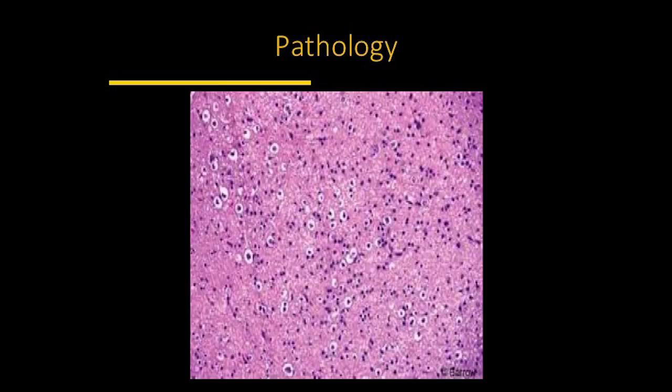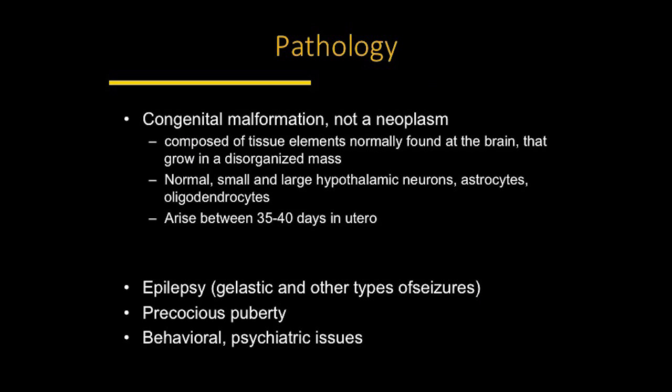On pathology, this is how a hypothalamic hamartoma looks after it's been removed. It is called a congenital malformation — the patient was born with it, and it is not a true neoplasm. It's usually composed of tissue elements normally found within the brain, just growing in a disorganized way. They have normal small and large neurons, astrocytes, and oligodendrocytes. This happens very early in utero — early in gestational development.